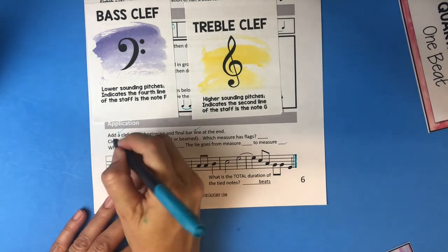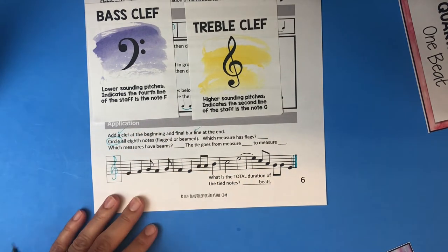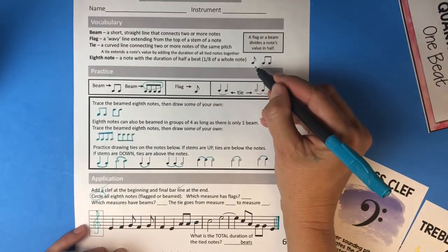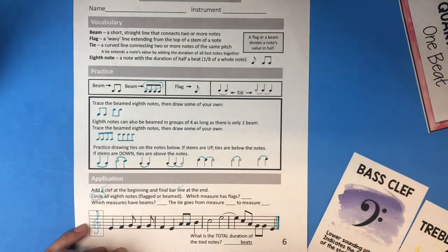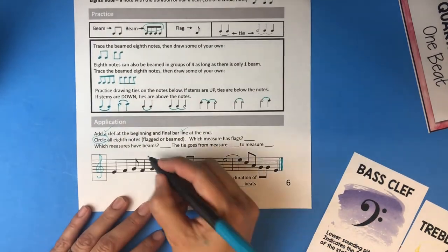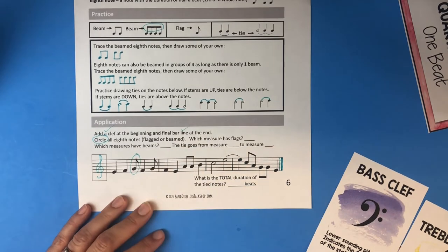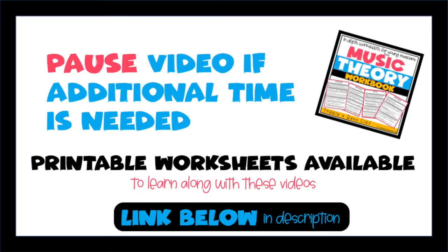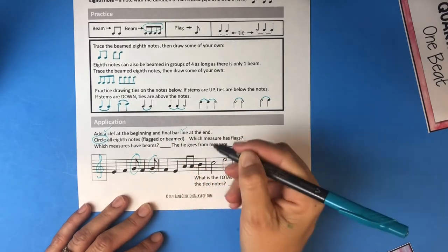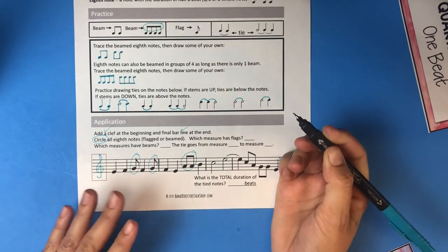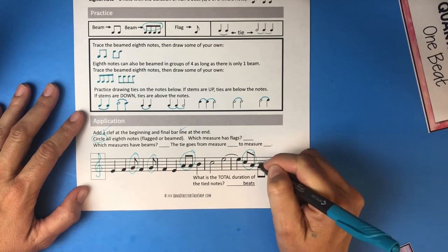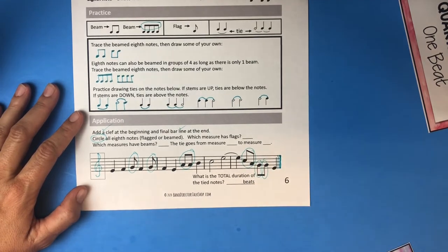Now circle all the eighth notes, whether they are flagged or beamed. We're looking for flags like this, and beams like this. Here's one right here — circle that one. You should have circled this one, these two together, and then these two and then these. If you circled them individually, that's okay — as long as you knew they were eighth notes.